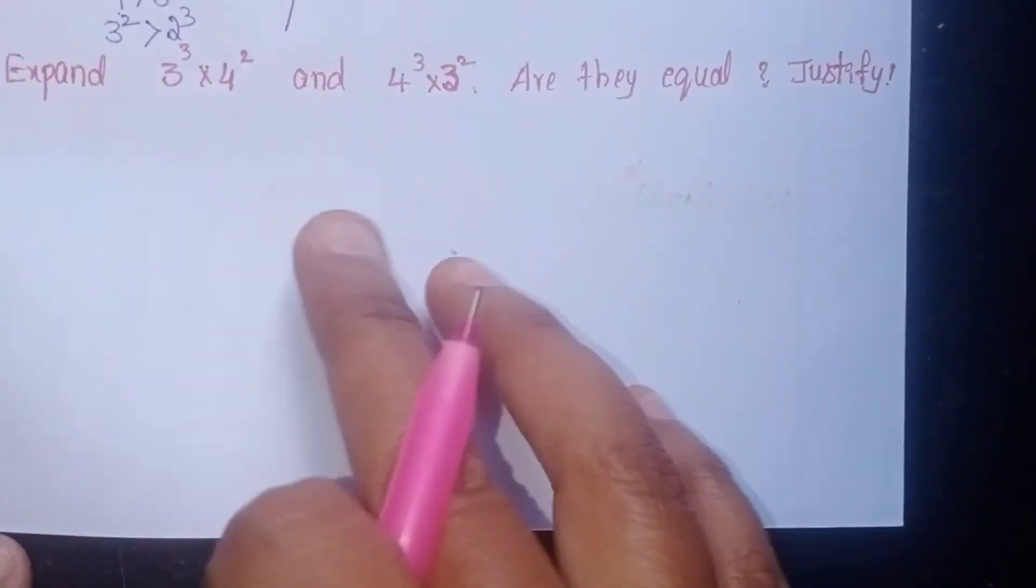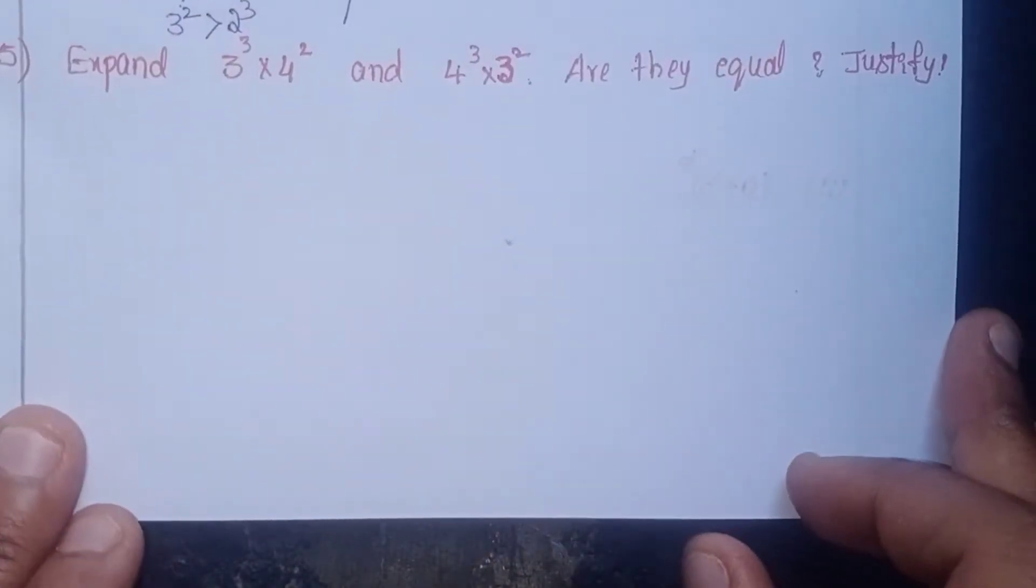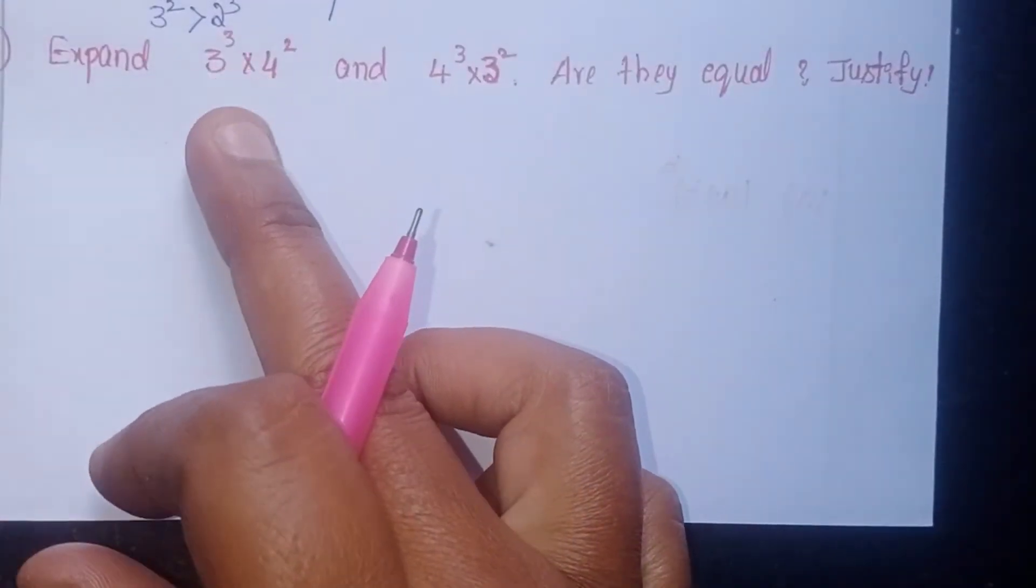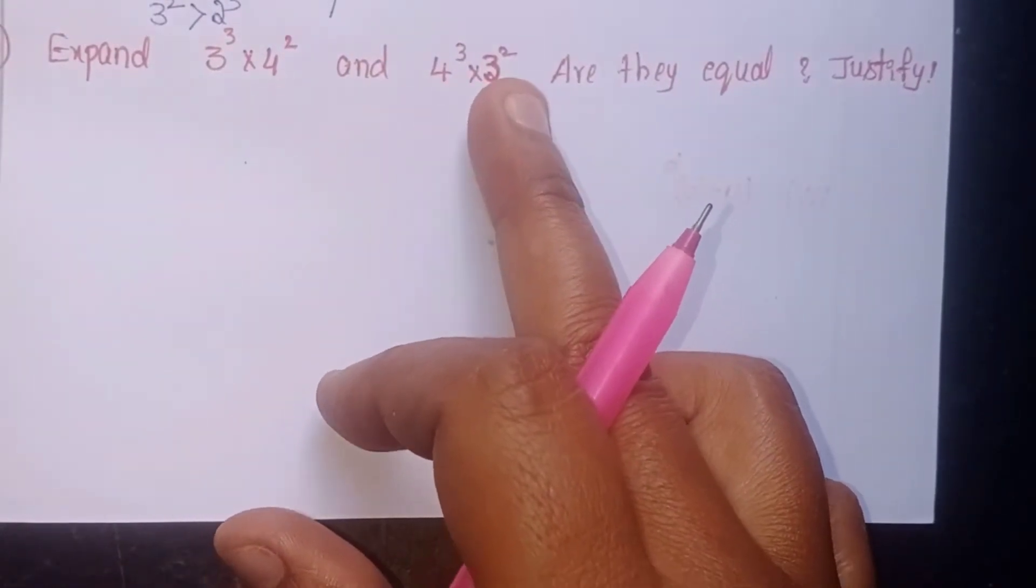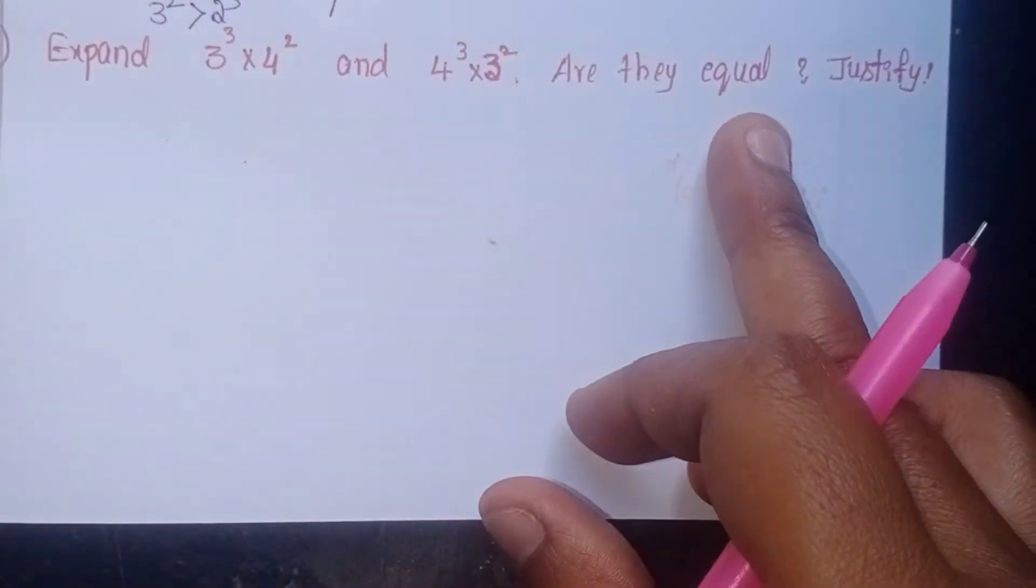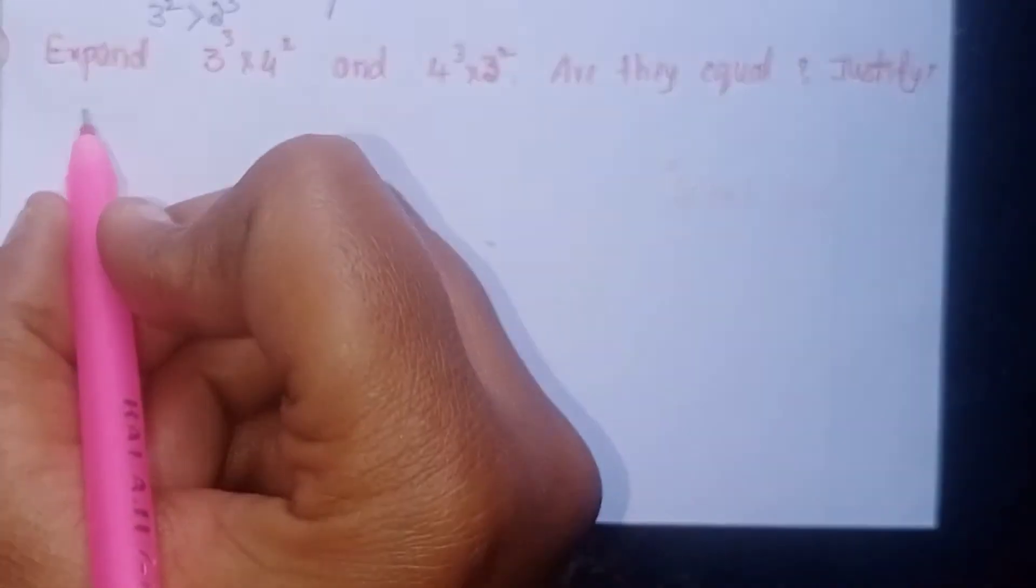8.1, Question Number 5. Expand 3³×4² and 4³×3². Are they equal? Justify. Okay, see, given...